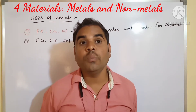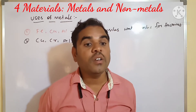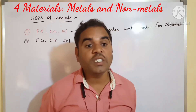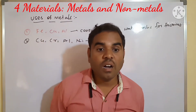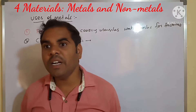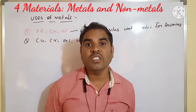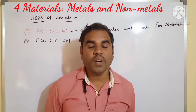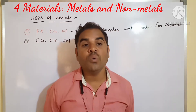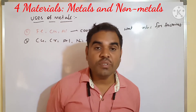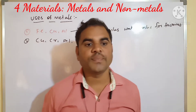Aluminum in the form of an alloy is used to make aeroplanes. Ferrous in the form of steel is used for agricultural implements like ploughs and for sowing seeds. Many vehicles are also manufactured using these elements.